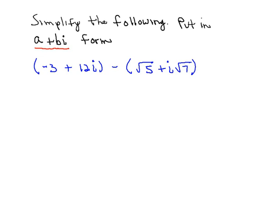So the first one we have is negative 3 plus 12i, and just to point out that the negative 3 would correspond to a and 12 to b. And we're going to subtract from that the complex number, the square root of 5, which would be our a value, plus i times the square root of 7, where the square root of 7 would be our b value.